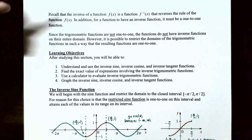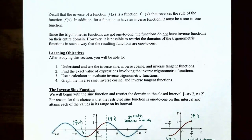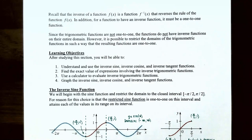Recall that the inverse of a function f(x) is the function f⁻¹(x) and it reverses the rule of f(x). For a function to have an inverse function it also must be a one-to-one function. Since trigonometric functions are not one-to-one functions — they don't pass the horizontal line test — they do not have inverse functions on their entire domain.